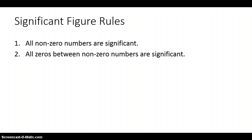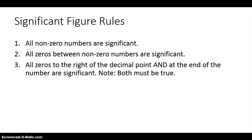Rule number two: all zeros between non-zero numbers are significant. Rule number three: all zeros to the right of the decimal point and at the end of the number are significant. Both conditions have to be true.